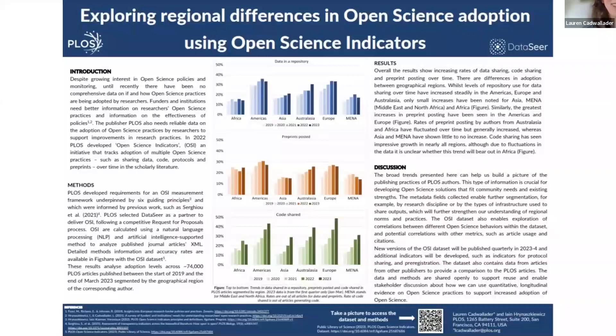I would happily talk about open science indicators today. If anyone has any questions, I'd be happy to answer them. I'll put some links into the chat with the link to the data set for anyone who's interested in using it. Version four should be released next week. We always welcome community feedback on the data set — we really want to make sure it's useful for other people as well.